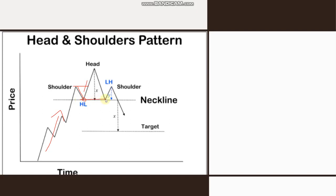The market goes up again, then reverses from the shoulder level, takes resistance, and goes down. It breaks this support level. Whenever you see a formation like this, it is called a Head & Shoulder Pattern. The highest point is called the Head, the two outer peaks are called the Shoulders, and this particular line is called the neckline.